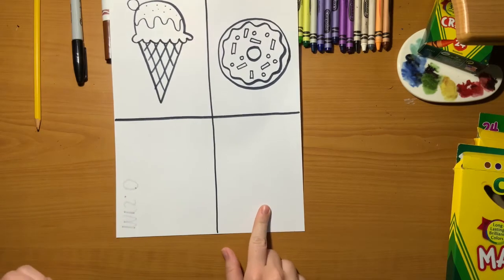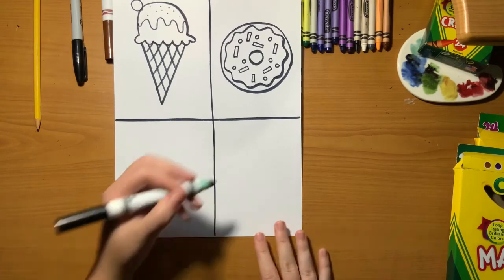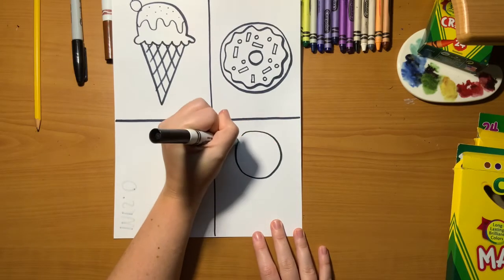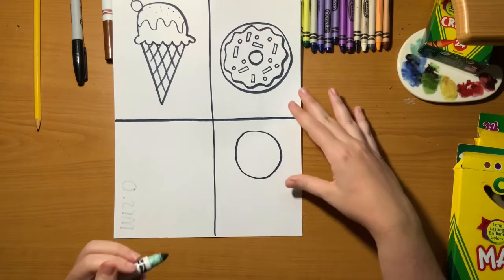Now we're going to move on to our third drawing. Remember, it doesn't matter which boxes you put these in. We're going to draw a circle. This is going to be the top of our lollipop.